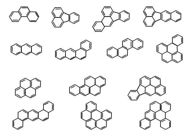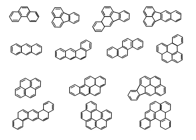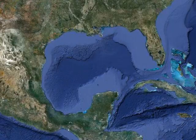One group of chemicals that we study are the polycyclic aromatic hydrocarbons, or PAHs. These are chemicals of concern because some PAHs are toxic or can cause cancer in humans and wildlife. PAHs are often found at Superfund sites and are also one of the principal contaminants of concern in oil spills, such as the recent oil spills in the Gulf of Mexico.